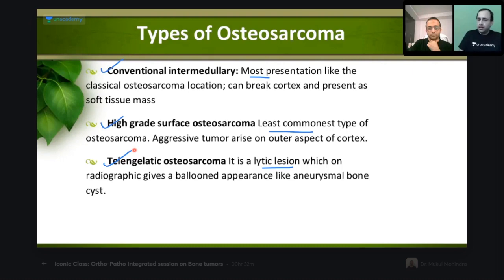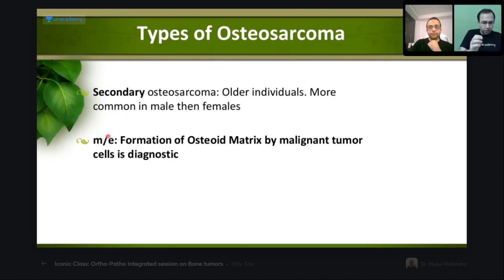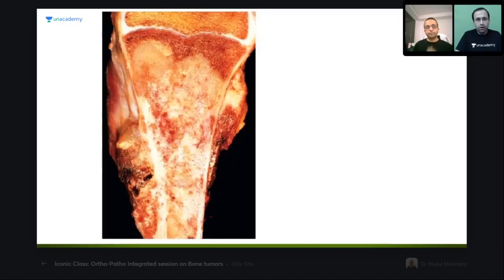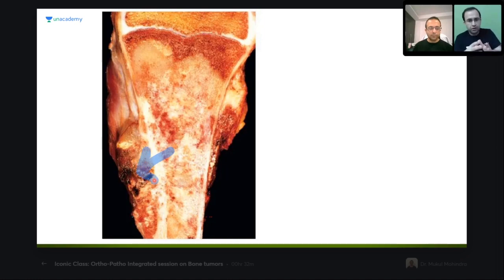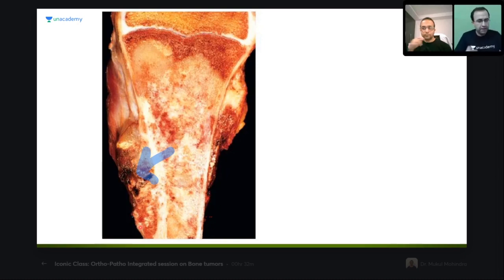Grossly, in the conventional intramedullary type, the whole medulla is replaced with extension into the cortex — breaking the cortex and going out as a soft tissue mass. What is highlighted in blue shows the medullary involvement of osteosarcoma with extension breaking the cortex as a soft tissue mass. This is osteosarcoma.